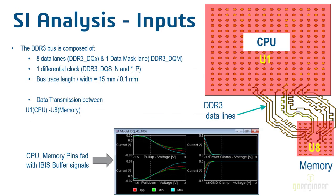In a practical example, we have a CPU U1 connected to memory U2 using DDR3 parallel lines. Very important are IBIS models — so-called behavioral models invented around 20 years ago — which represent the output impedance of the driver and input impedance of the receiver. We don't care what is inside the chip; it's not a transistor-level SPICE model, but a behavioral model of the impedance. It's very important because it allows us to do signal integrity simulation.